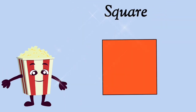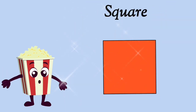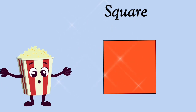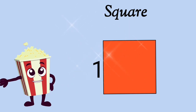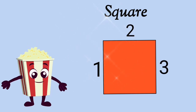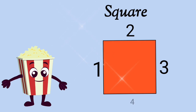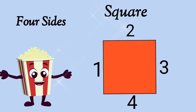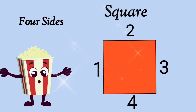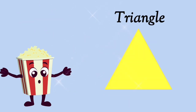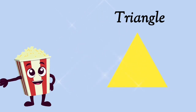Square. How many sides does a square have? Let's count. 1, 2, 3, 4. A square has 4 sides. This is a triangle.